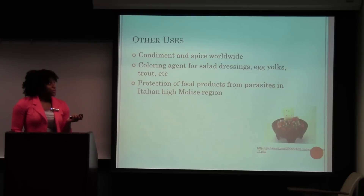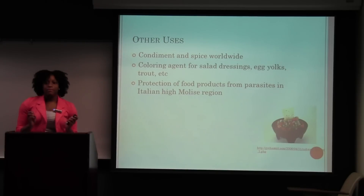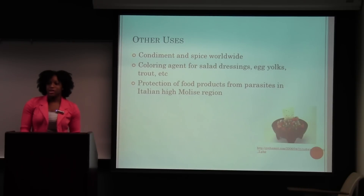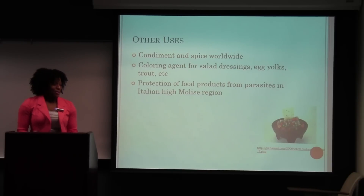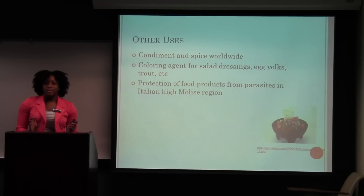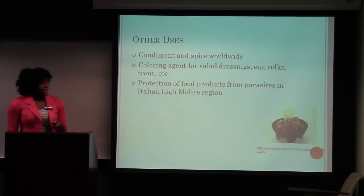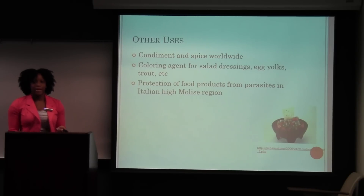Interestingly, in egg yolks and trout — they fed leftover waste from pimento processing to chickens, and found that it gave the egg yolks a rich, deep yellow color that people found desirable, so they've kept feeding them that. Another unintended consequence was that chicks fed the pimento waste were actually healthier. And in the Italian high maloist region, they use it to protect their food from parasites.